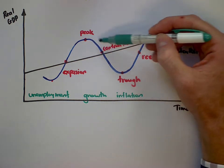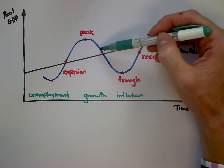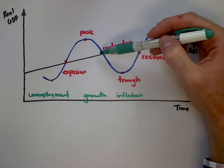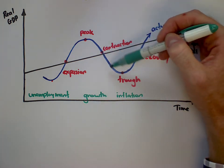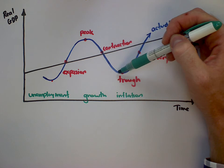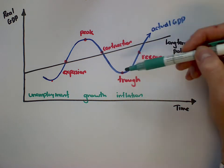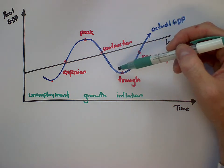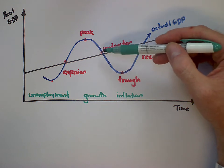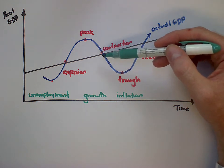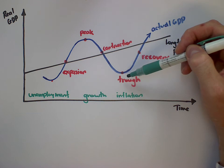Coming down into a period of contraction, growth is perhaps declining. So we expect maybe negative growth as we get below the curve. Unemployment starts to rise. The further we get down, less inflationary pressures. And so less inflation we sometimes call either perhaps disinflation, where the rate of inflation is less than the previous year, or even deflation in the bottom of a trough.